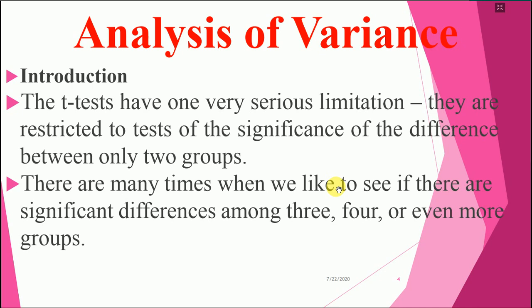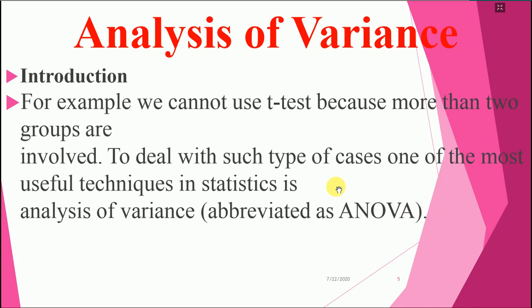Analysis of variance — the t-test has one very serious limitation: it is restricted to testing the significance of the difference between only two groups. When you are talking about two groups, you can apply the t-test. But when you are talking about more than two groups, you will apply ANOVA. There are many times when we want to see if there are significant differences among three, four, or even more groups.